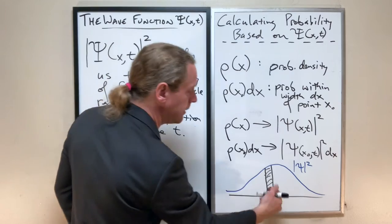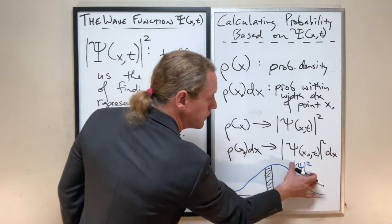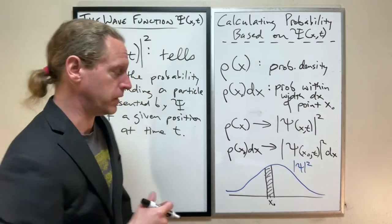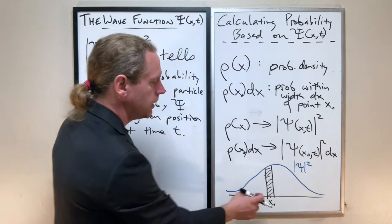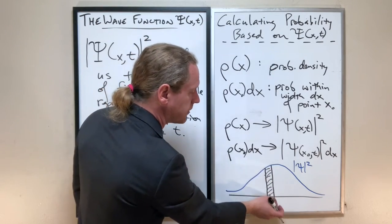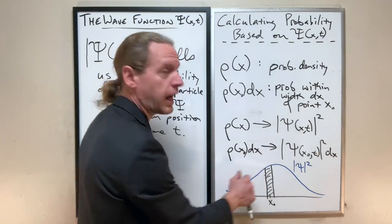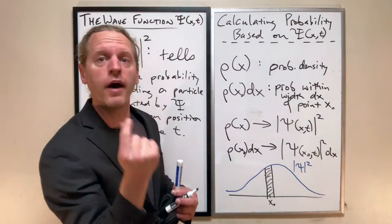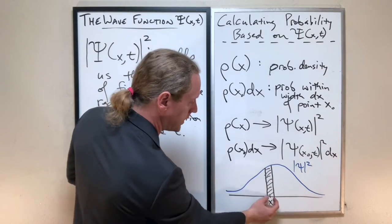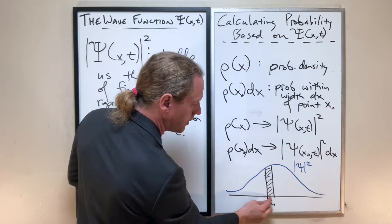The point is, we can now interpret this if that blue line is our new probability, our quantum probability function. The area of that slice there will tell us how likely we are to find a quantum particle within a width dx of x naught.